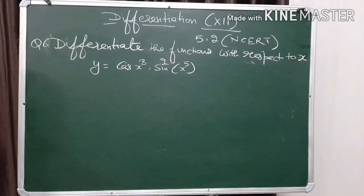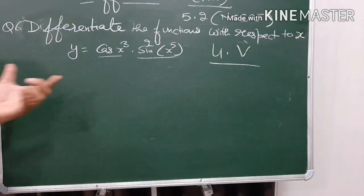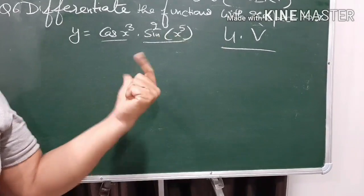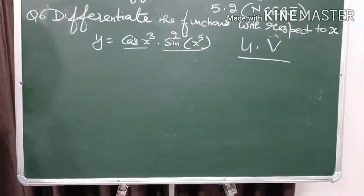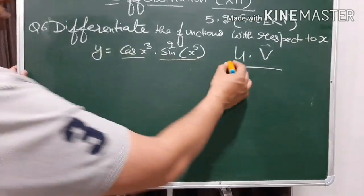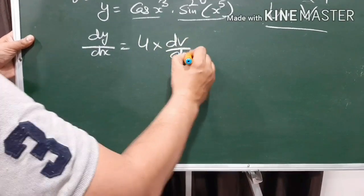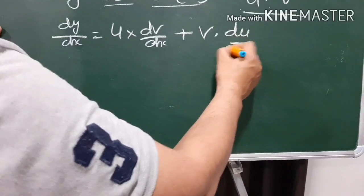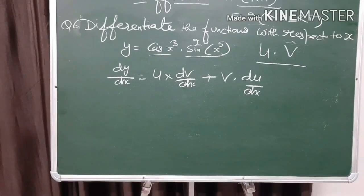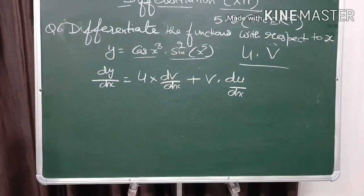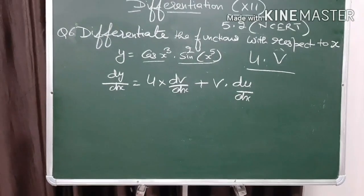Now we will do question 6, which is on the product rule of two functions. When we multiply two functions that cannot be combined into a single term — here one is a function of cos and the other is a function of sin — we apply the product rule: derivative of the first function as it is times the derivative of the second, plus the second as it is times the derivative of the first.